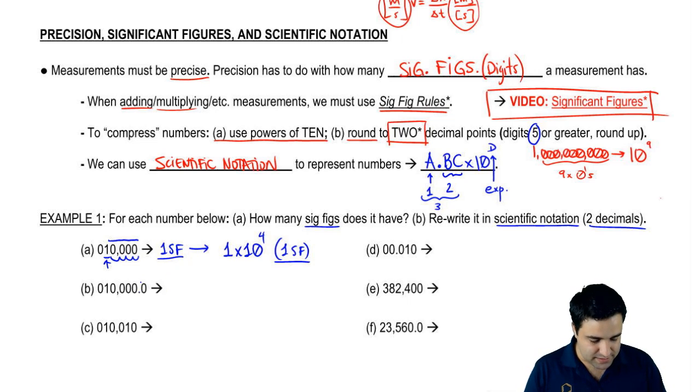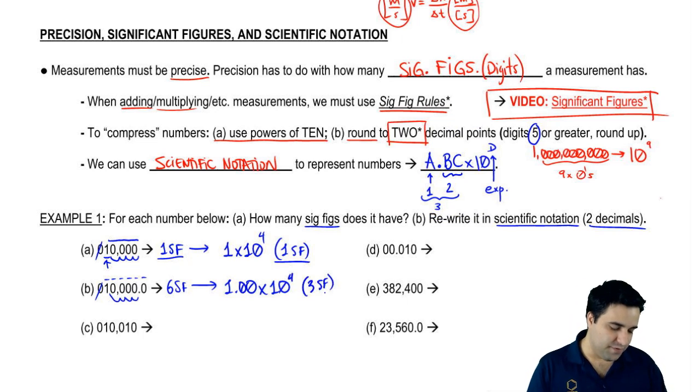Here, because I have a zero in the decimal, this counts as sig figs. So all of these numbers count except a leading zero. The leading zeros never count. So I have one, two, three, four, five, six. So six significant figures. But when you write your scientific notation, you only want three digits. So I'm going to do 1.00 and the rest gets rounded, which is really easy because it's just a bunch of zeros. Times ten to the, let's see, one, two, three, four. Times ten to the fourth. This has three significant figures. Notice how now this number is less precise. There's less significant figures because we're rounding to conform to scientific notation.